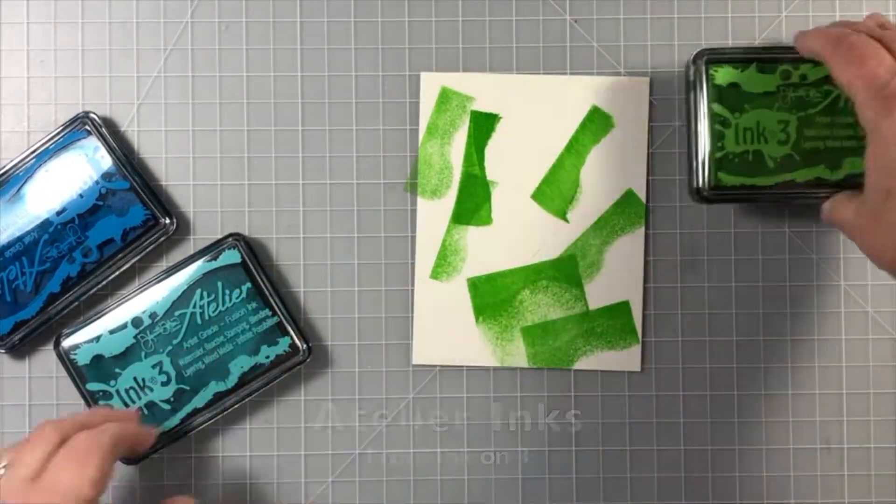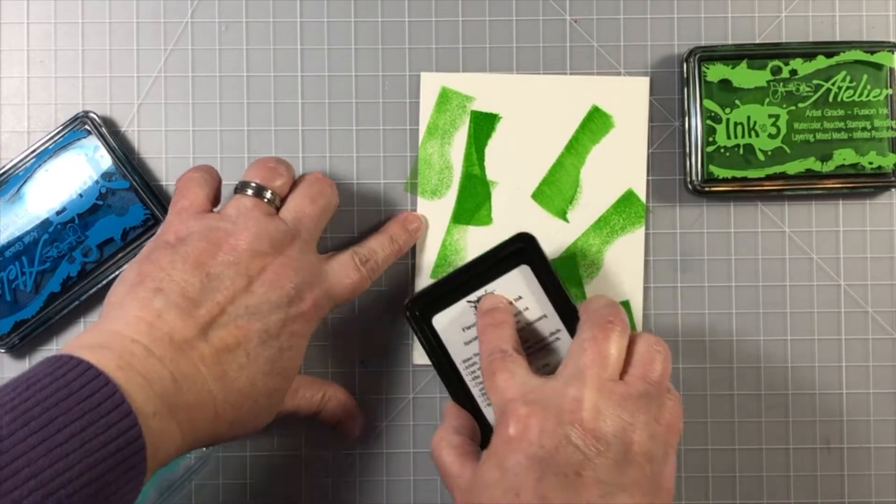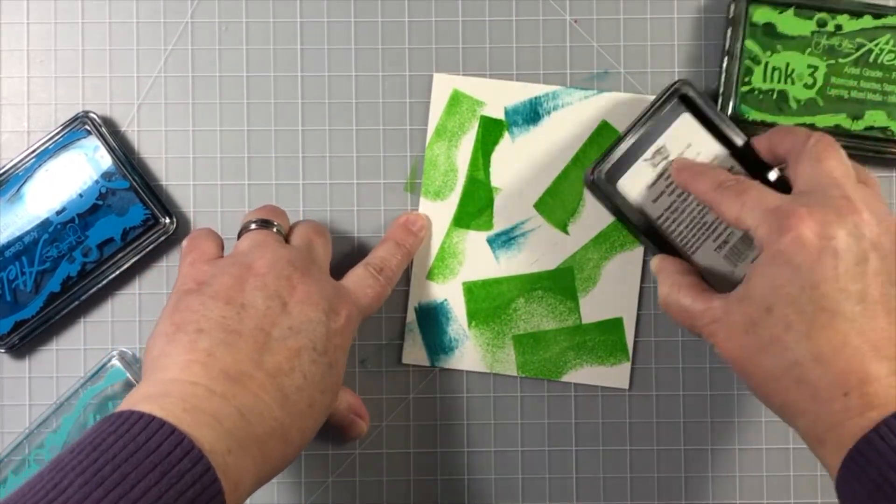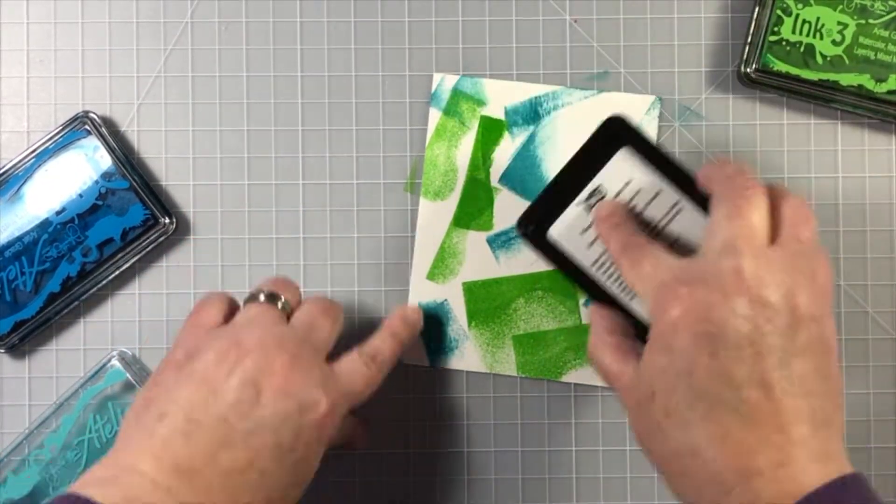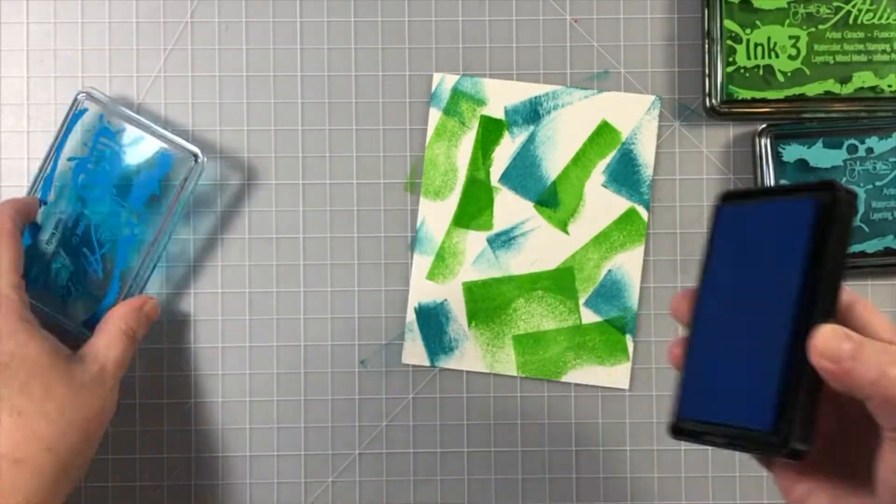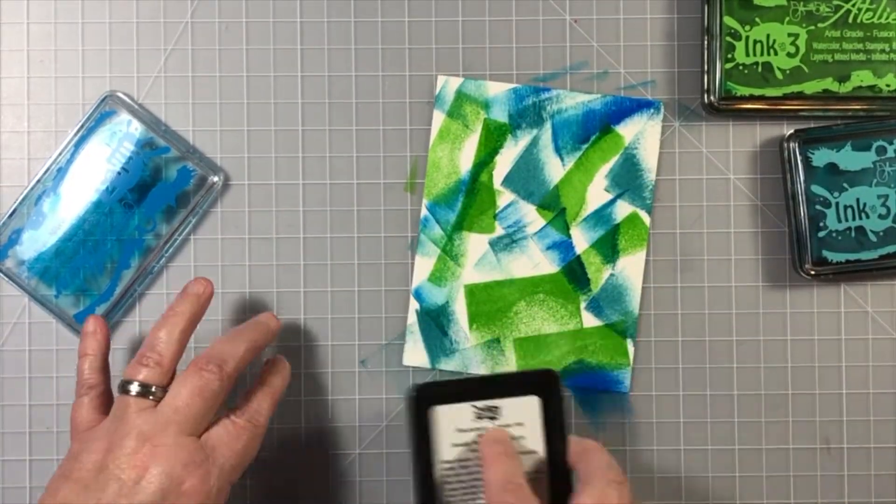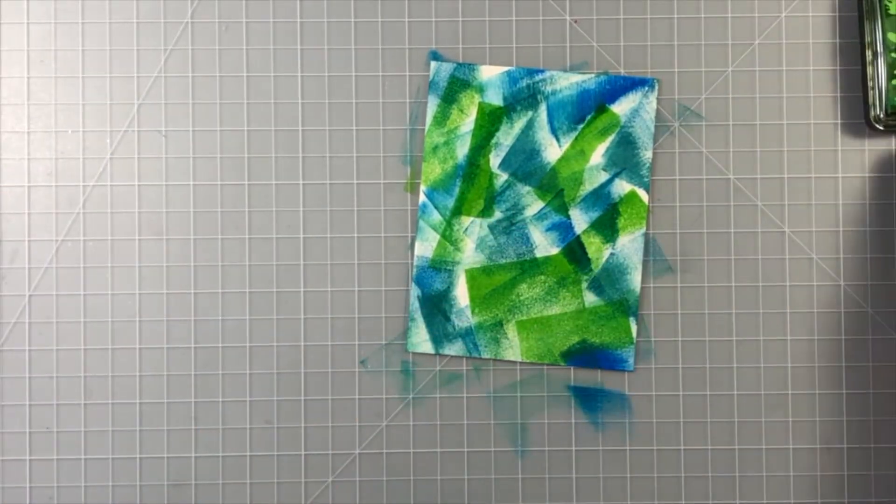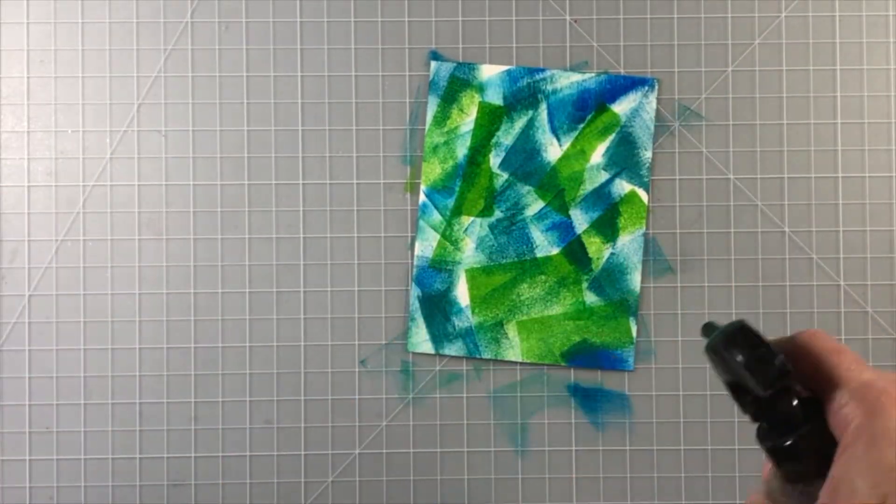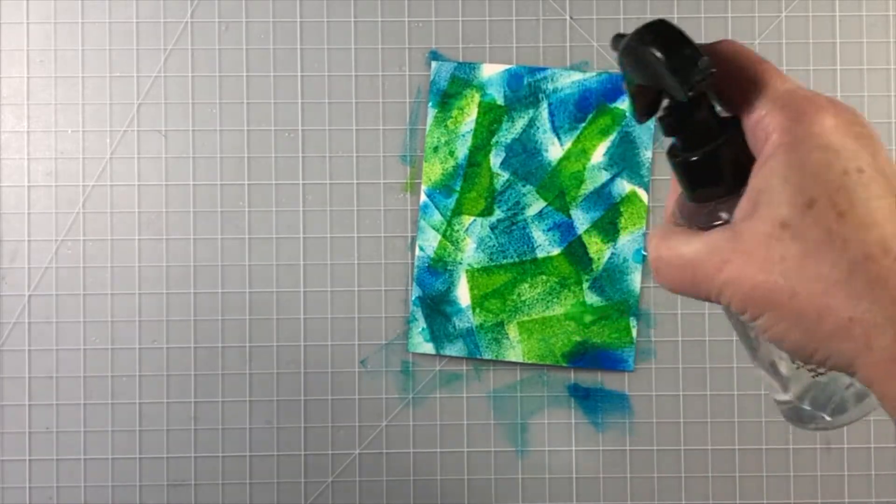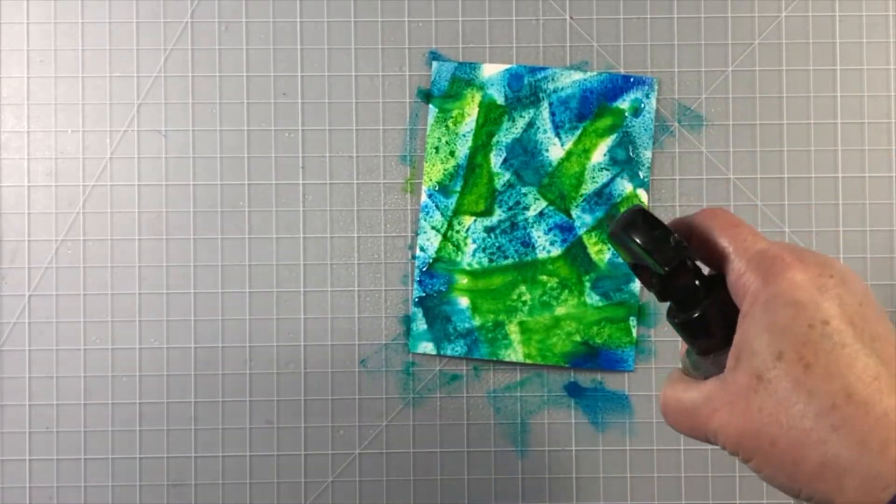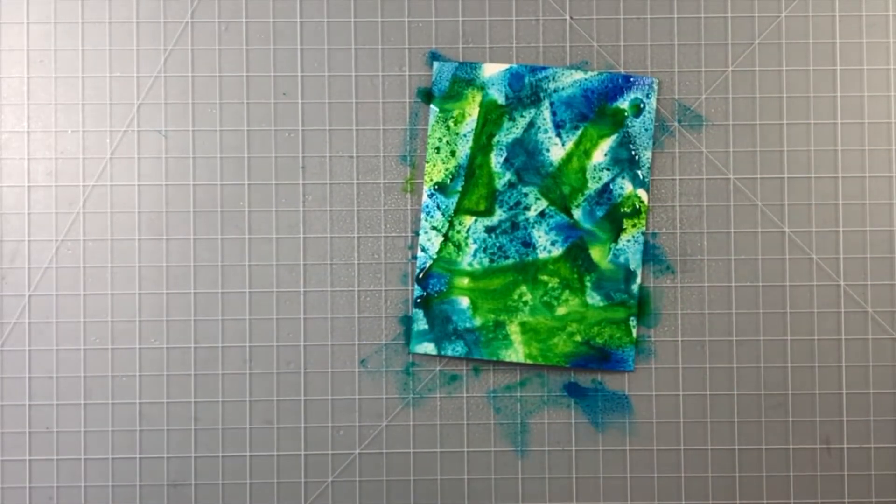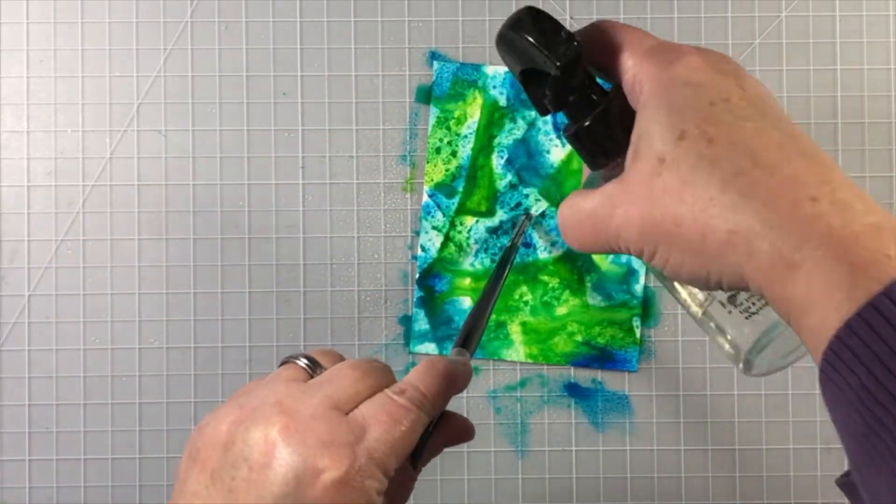Let's get started on the background technique. This is a piece of watercolor paper cut to four and a quarter by five and a half. We will cut it down later, and I'm taking some of the Atelier ink pads that are really concentrated ink and swiping them directly onto that watercolor paper. You could use ink refills to just drip it on if you like, but I like to do this technique with my stamp pad because I can get some really unique looks.